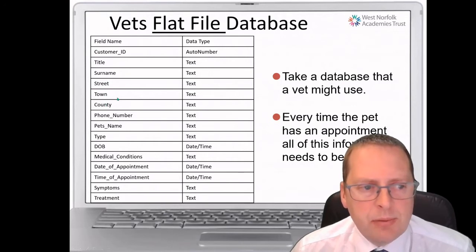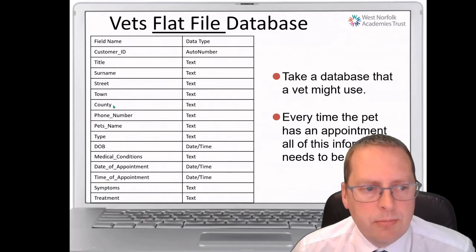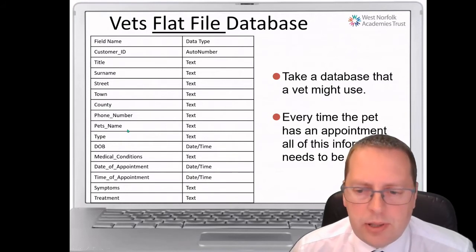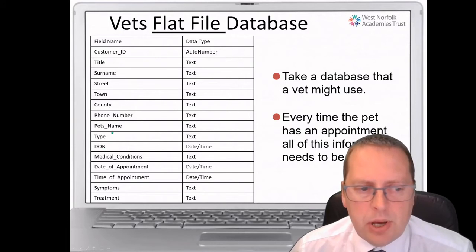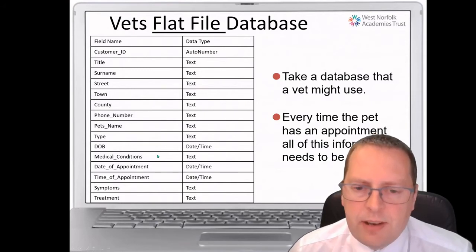Then they've got a phone number, pet's names, type of pet, date of birth of the pet, any medical conditions, and date of appointments. There's a lot of information here for a vet's database. So every time the pet has an appointment, all of this information has to be typed in again. That's the real disadvantage of a flat file database — a lot of information needs to be retyped.